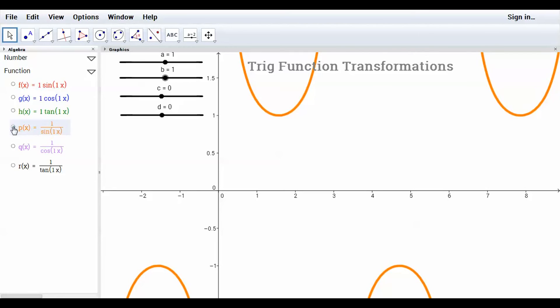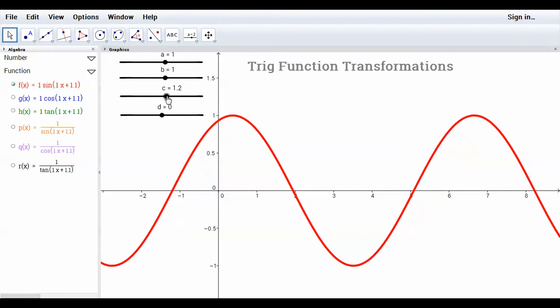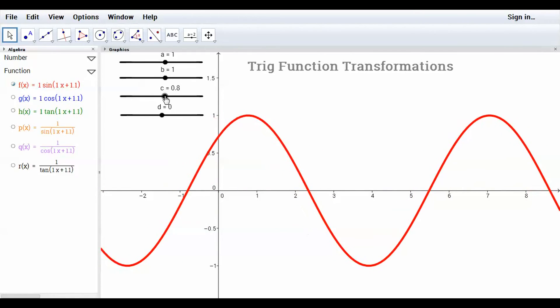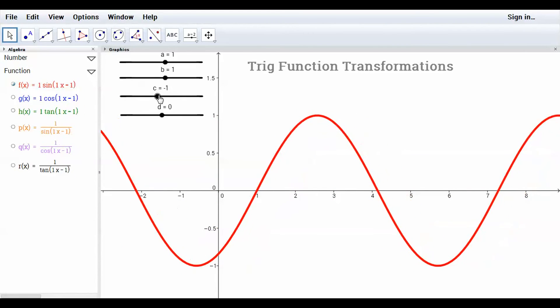So let's change - let's go back to sine. And let's change the C value. The C value changes the phase shift. So this is going to be a horizontal translation. So if I change it, watch as I'm moving my slider left and right. Remember I talked about if it's a positive C value...